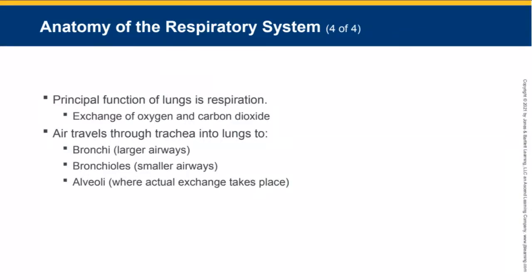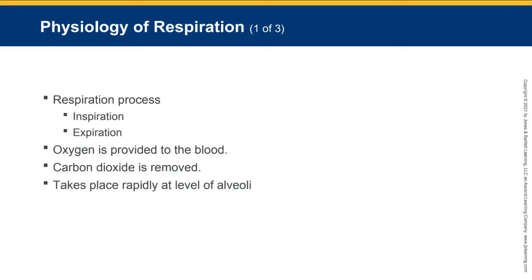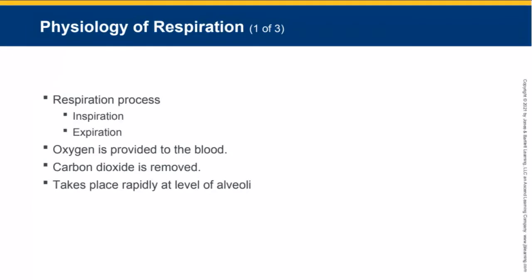The principal function of the lung is respiration, which is really the exchange of oxygen and carbon dioxide. Air travels through the trachea and into the lungs, then onto the bronchi, which are the bigger airways, which branches off into smaller airways called bronchioles, and then the alveoli where the actual exchange of gases takes place. During the respiratory process, two things happen: inspiration or inhalation and expiration or exhalation. Oxygen is provided to the blood and carbon dioxide is removed from it. In healthy lungs, this exchange of gases takes place rapidly at the level of the alveoli.